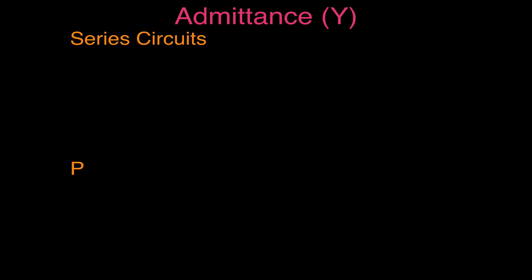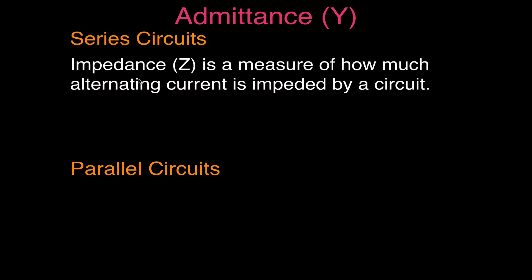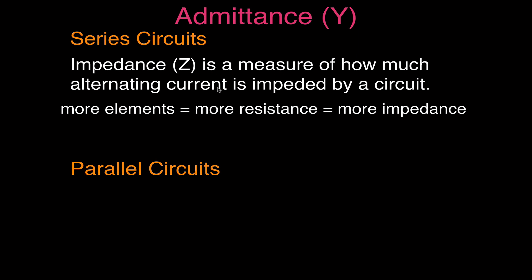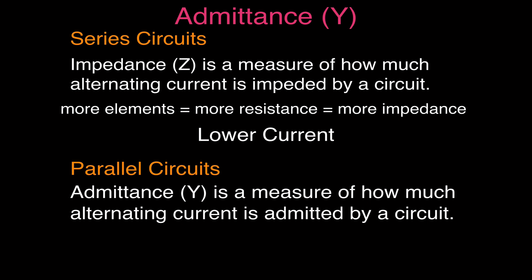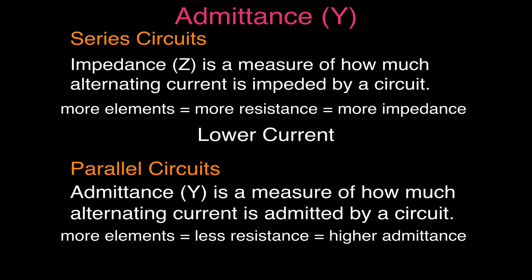Now let's discuss admittance. For parallel circuits we often use admittance — how much current is admitted through the circuit. Adding more elements in parallel increases current and admittance. For series circuits we use impedance, which measures how much current is impeded — more elements in series means greater impedance and lower current. Admittance is the opposite: more parallel elements means less resistance, higher admittance, and higher current.